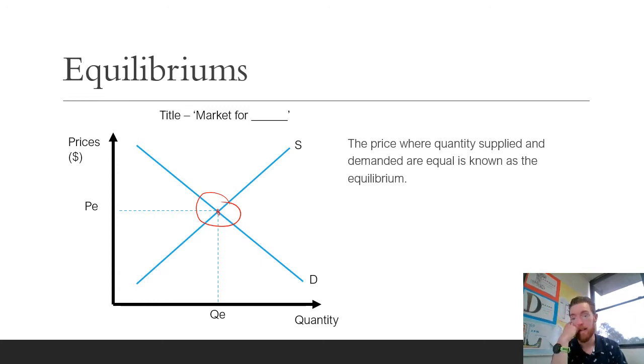If we looked at a market, say the market for pittas, let's just say a pitta is like seven dollars and maybe 100 get demanded there from the general public. That's the price where quantity demand and quantity supplied are equal.